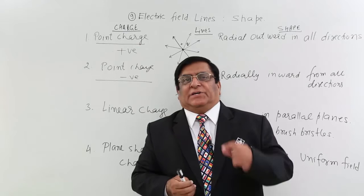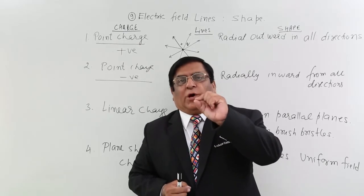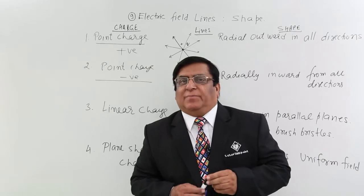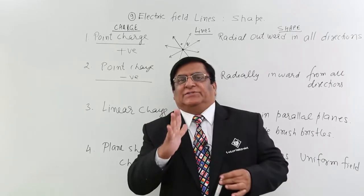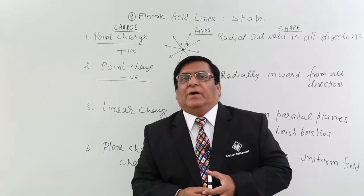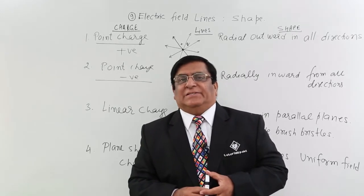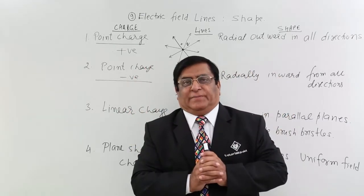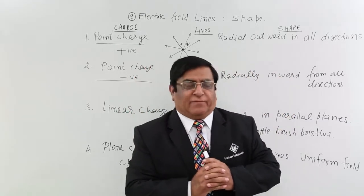Like a charge can be in a point, point size body. The charge can be in a line, the charge can be in a sheet like that. So, what will be the shape of electric field lines which will represent electric field around that charge body? We will take it one by one.